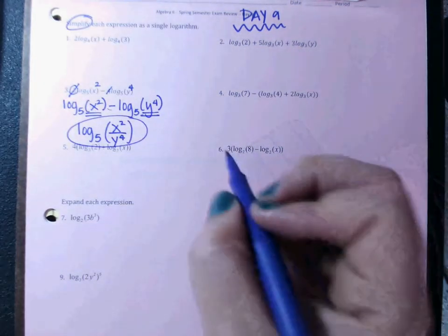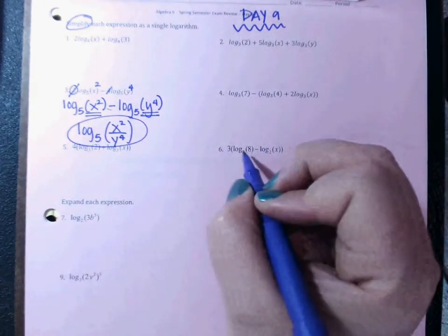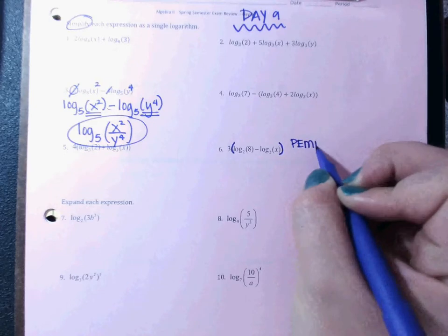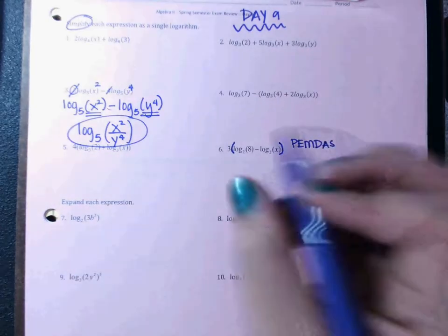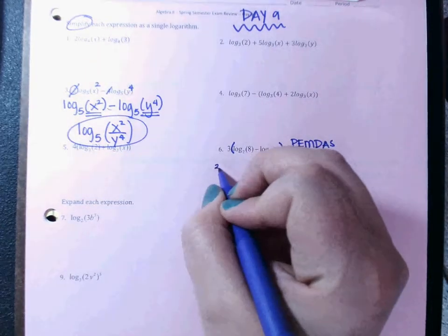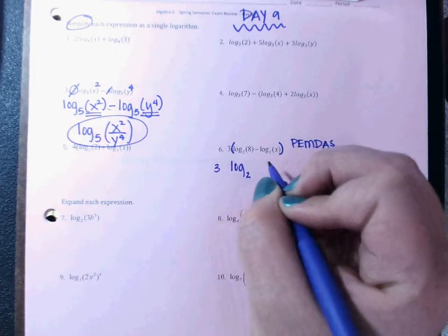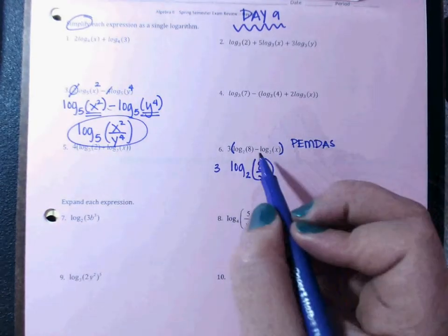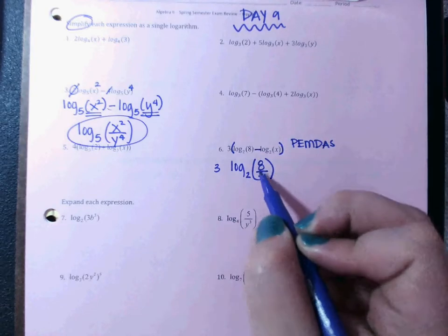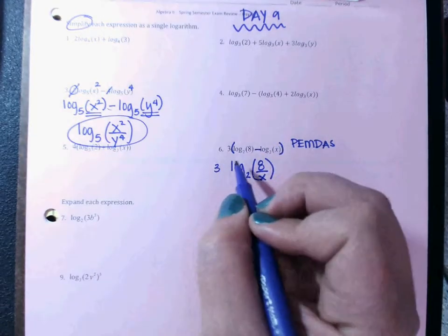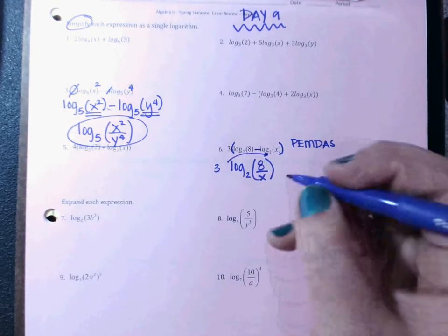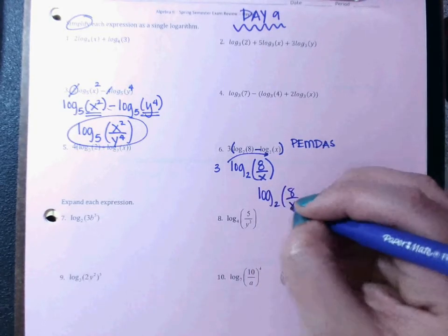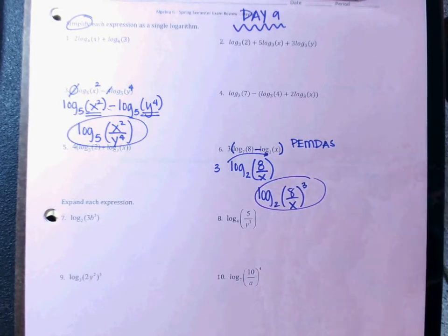Take a look at number six. Remember the parentheses — I'm going to follow PEMDAS, so I'll do the parentheses first. That gives me log base 2 of eight over x, because if it's a minus it moves into division. Then I can take my three and bump it up, so it would be log base 2 of (eight over x) to the power of three. That would be your answer.